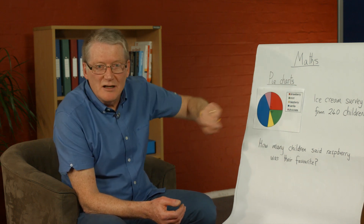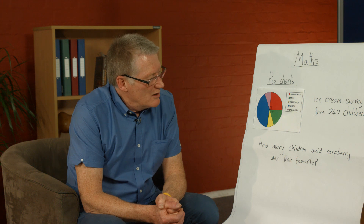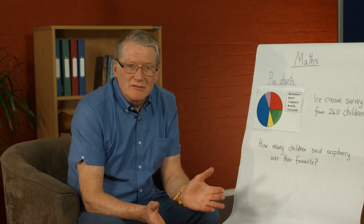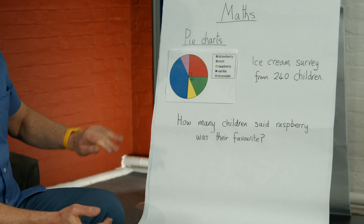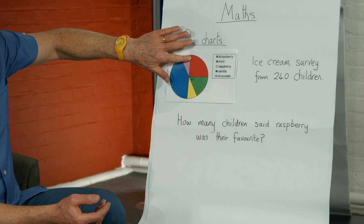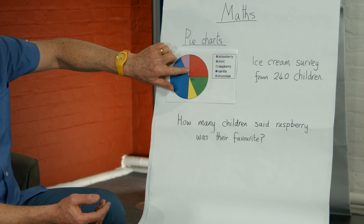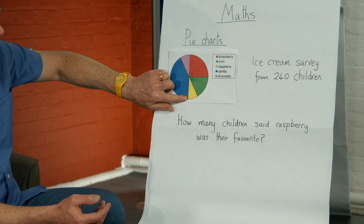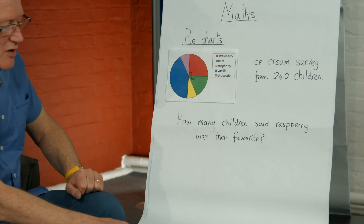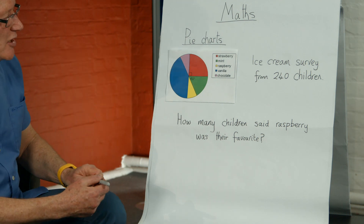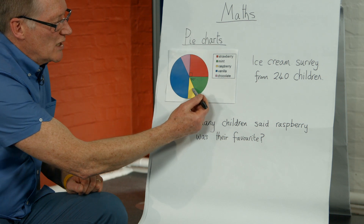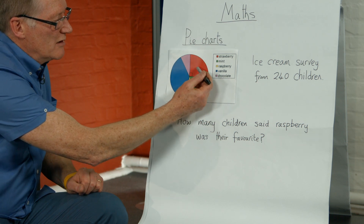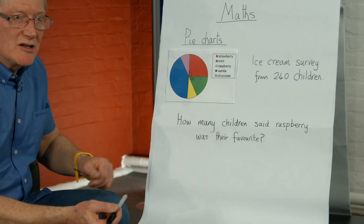We can see raspberry is the yellow sector of the pie chart, but there's no angle on the yellow section, so we've got to find that angle. Looking at the pie chart, you can see straight down the middle we've got a diameter, which is a straight line, so we know that angle is 180 degrees.